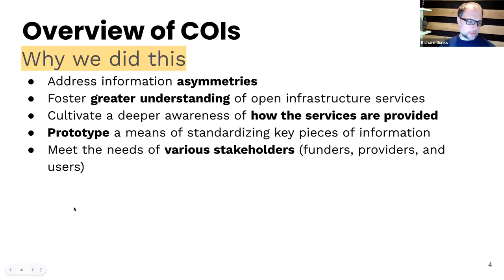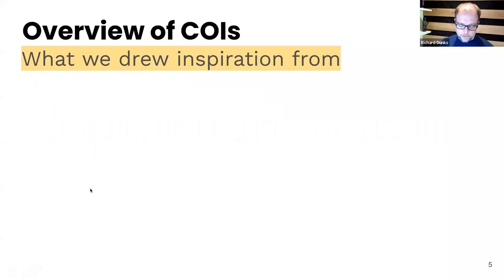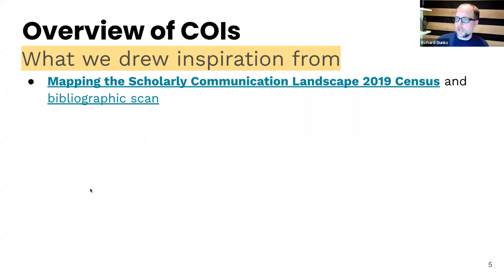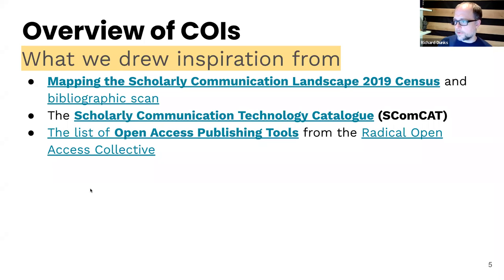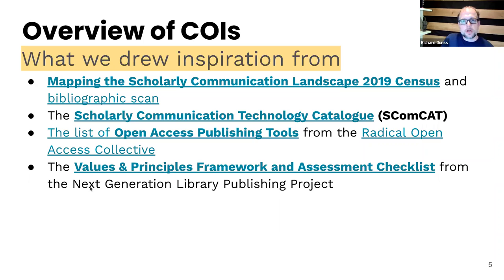This was an opportunity to validate whether this approach is useful, interesting, and providing value. There's a lot of learning that happened in the process. We're coming to the end of this prototyping phase and looking at how to scale forward — making it more comprehensive, more usable, more valuable to institutions and funders with a vested interest in this information. We stand on the shoulders of giants: the mapping the scholarly communication landscape census and bibliographic scan was a very important inspiration, and the SCOMCAT catalog was our starting point.